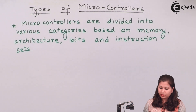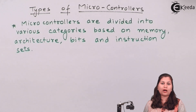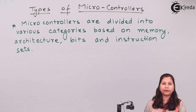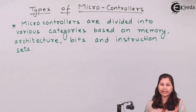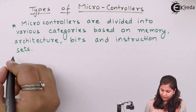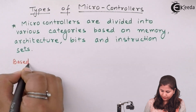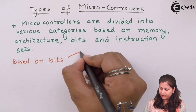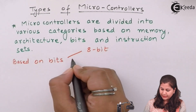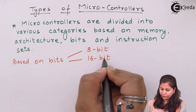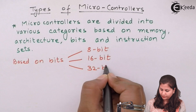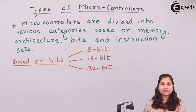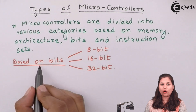Based on bits — that is, how many bits the microcontroller deals with, whether 8 bits, 16 bits, or 32 bits — the microcontrollers are divided into three categories: 8-bit microcontroller, 16-bit microcontroller, and 32-bit microcontroller.